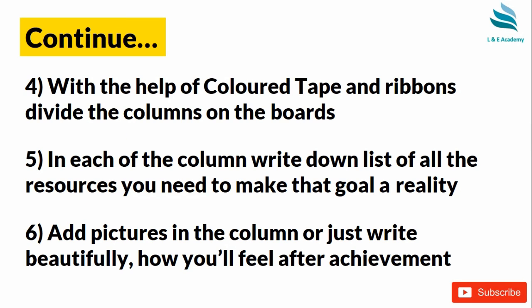The fourth step is, with the help of colored tape and ribbons, divide the columns on the board. The columns which you have made need to be distinguished — every column has to be separated. I used colored ribbons and divided all the columns with the help of colored tapes and ribbons. It looks very attractive and is also affordable — not much money you need to spend.